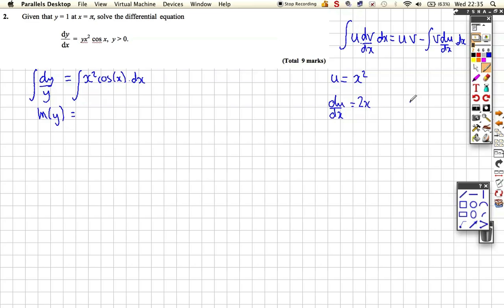Now, if we have dv/dx as our other function, which is cos x, then we've got dv/dx, we need a v, so we need to integrate. So integral of sine differentiates to cos, so cos integrates to sine. That saves us a little bit of hassle without any negatives.